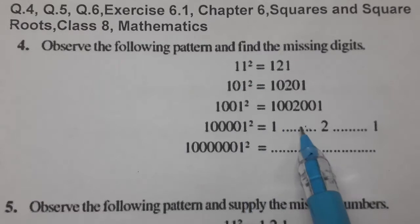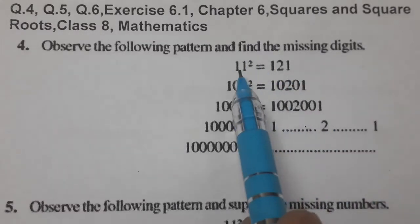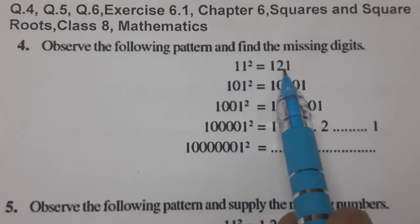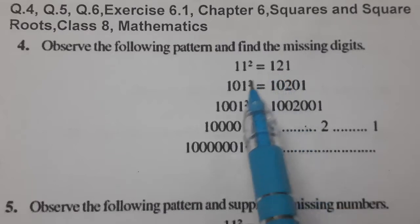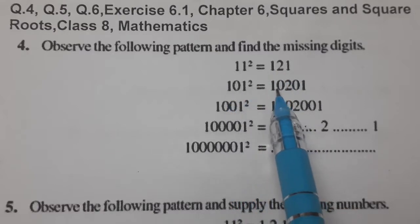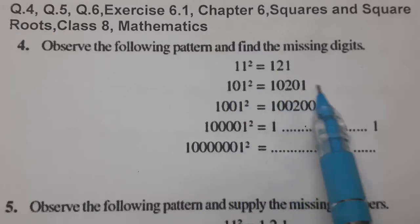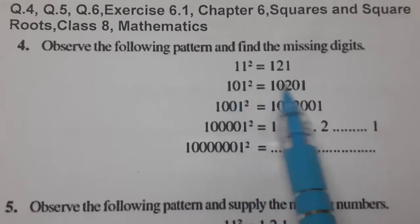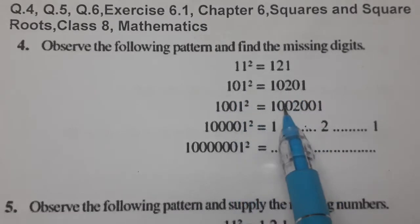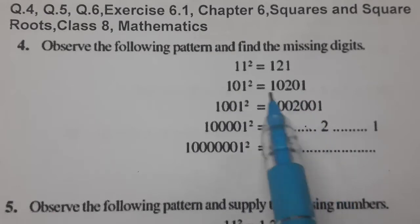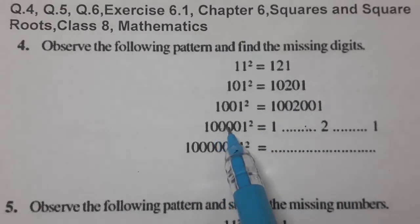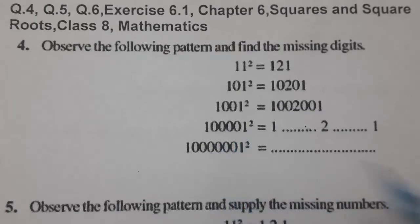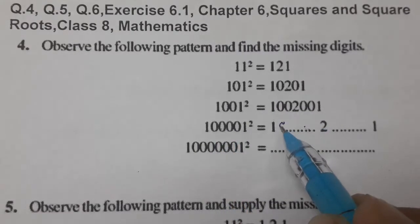We have to observe and fill out the missing values. See: 11 squared gives 121. Then 101 — two is in the middle, so 101 squared gives 10201. Then 1001 — two zeros here, two zeros there, two in the middle.